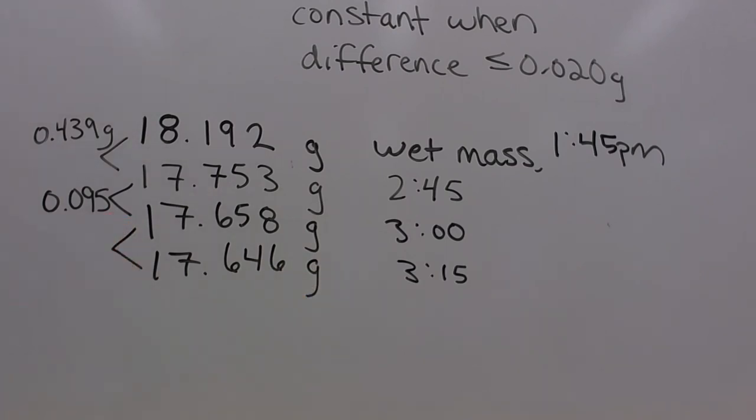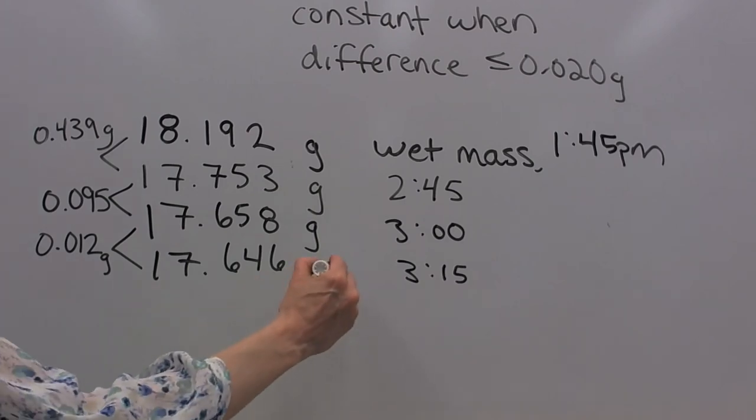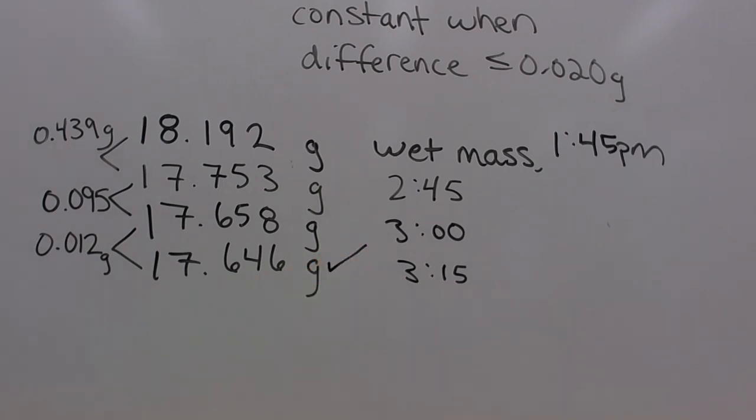When I take this difference, now I'm within range. The difference between those masses is 0.012 grams, and that, of course, is less than 0.020 grams. So we're going to call this good enough to be considered constant for this class.